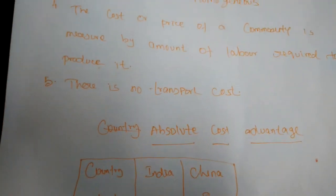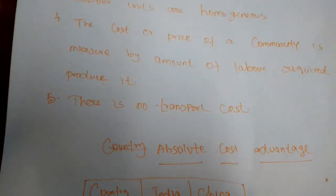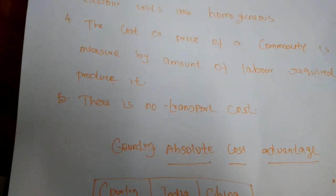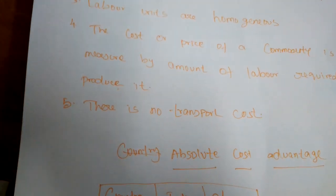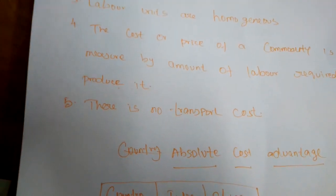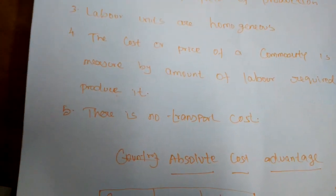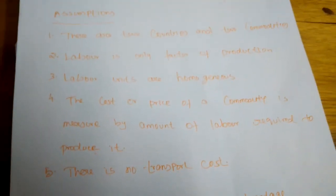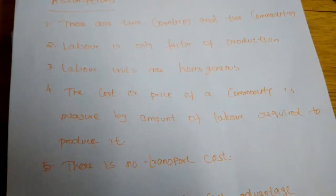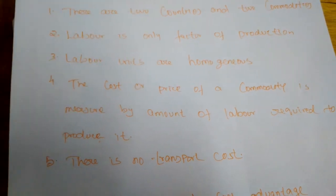The fifth assumption is there is no transport cost. In actual international trade, transport cost is considered, but for this theory we assume no transport cost. These five assumptions must be taken to explain the theory.